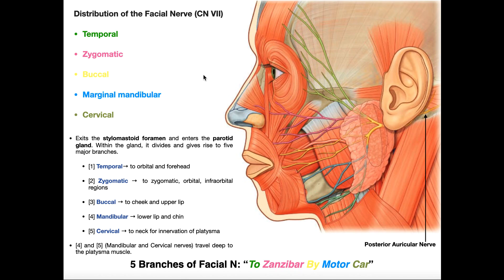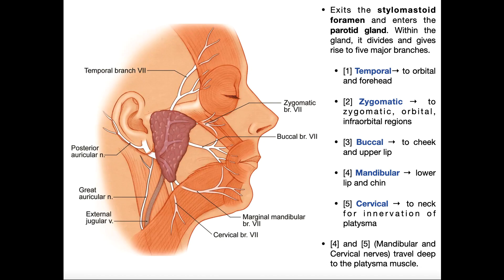To recap: the facial nerve exits the stylomastoid foramen, and the posterior auricular nerve goes back to innervate auricularis posterior and occipitalis. The facial nerve proper then enters the parotid gland, branching into the temporal branch superiorly, the zygomatic branch, the buccal branch going toward the upper lip and mouth, the marginal mandibular branch supplying the lower lip and chin, and then the cervical branch at the bottom. You can clearly see here that the platysma overlies the marginal mandibular and cervical branches of the facial nerve.